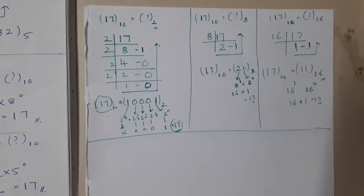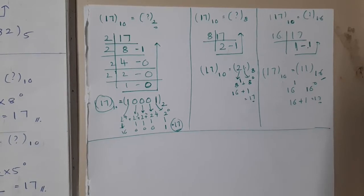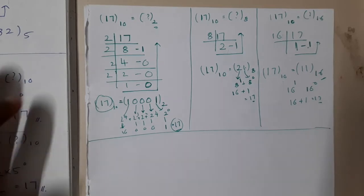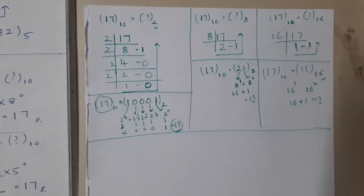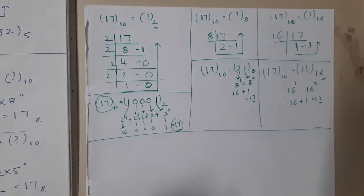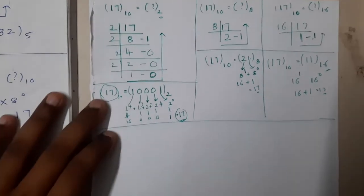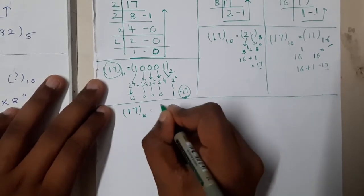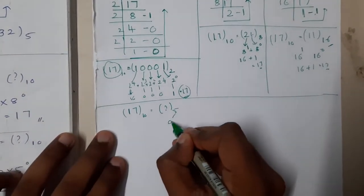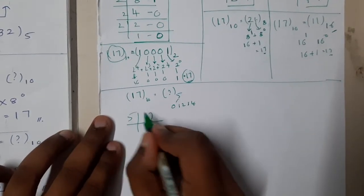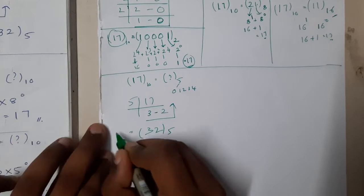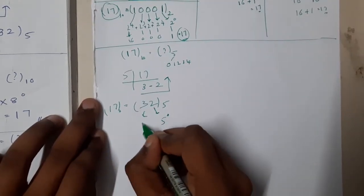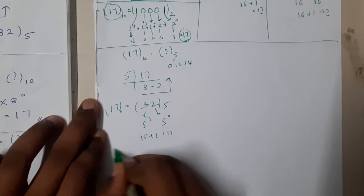In examinations, the evaluator might use any base — for example, 17 base 10 to base 5. Base 5 uses digits 0 to 4. Divide: 5 × 3 = 15, remainder 2; quotient is 3, remainder 2. So 17 base 10 = 32 base 5. Verify: 3×5¹ + 2×5⁰ = 15 + 2 = 17. This shows you can convert base 10 to any base.